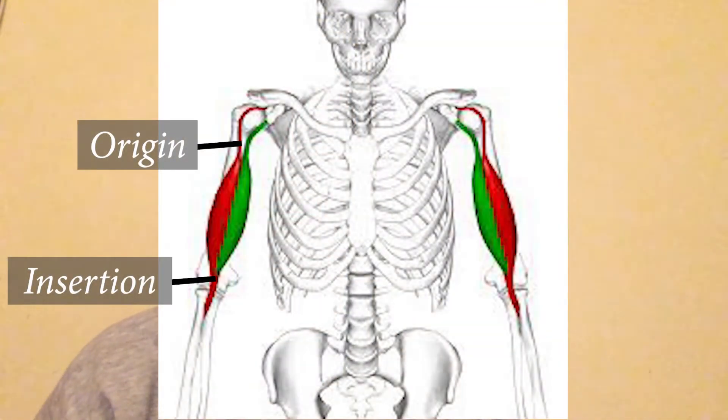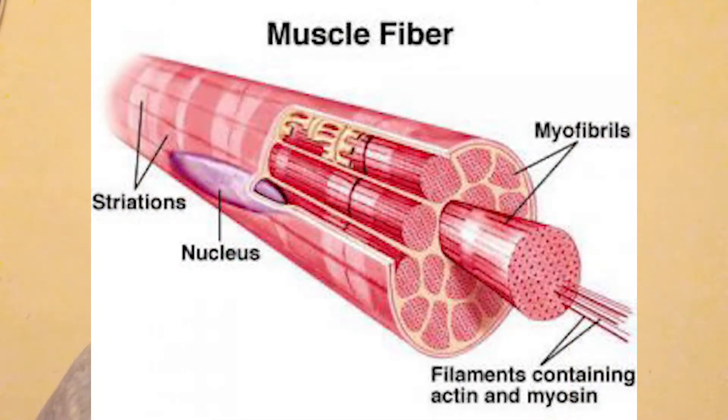Skeletal muscles are voluntary muscles — that means we tell them what to do and when we want them to do it. They are attached to the skeleton at origin and insertion points. Each muscle is made up of thousands of muscle fibres, which are made up of thousands of myofibrils, which are made up of thousands of protein filaments called actin and myosin.